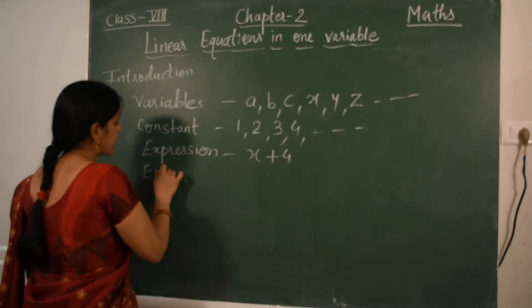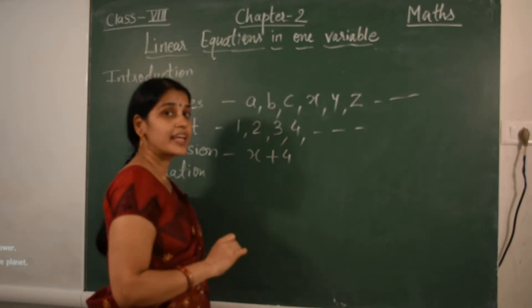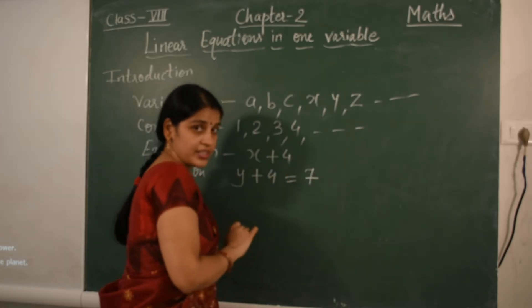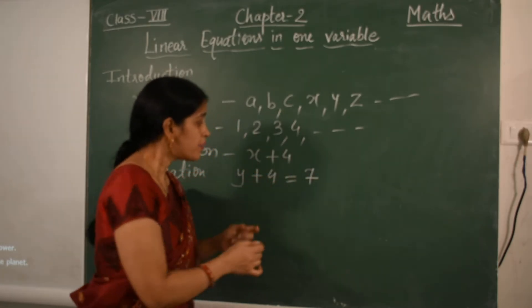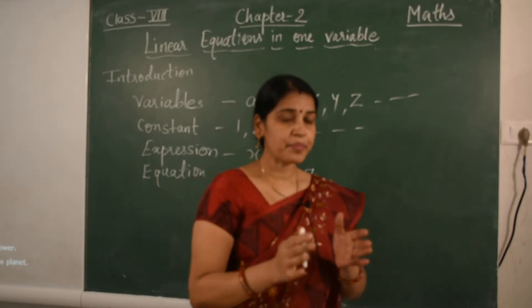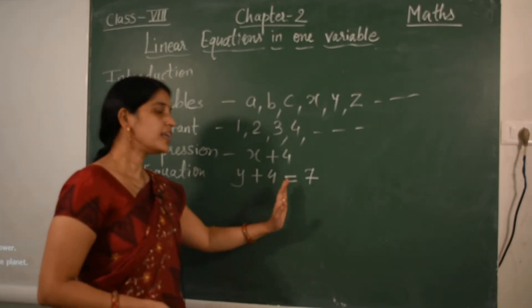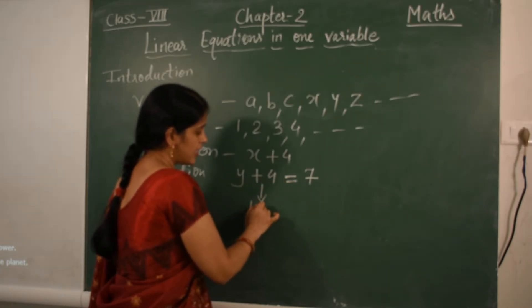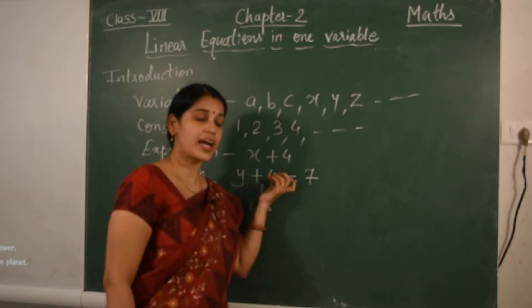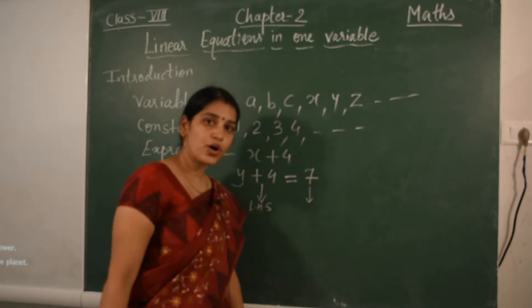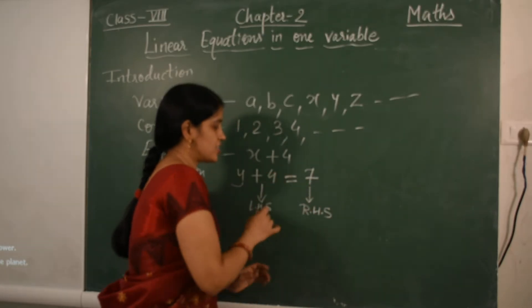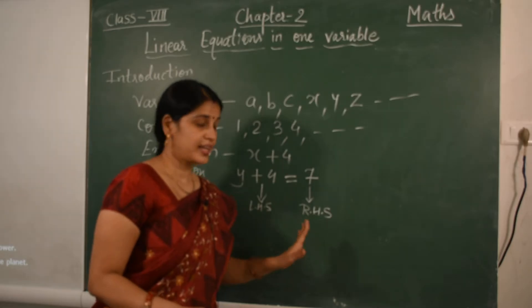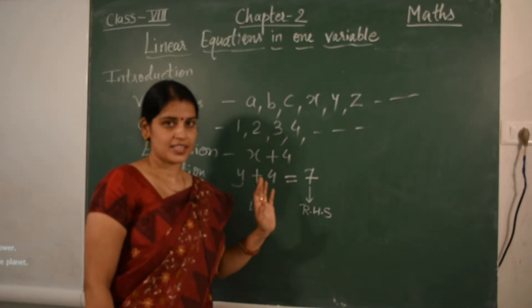Now next one is equations. What is an equation? An equation is like Y plus 4 equals 7. This is an equation because it has an equality sign. An equation contains an equal-to sign and has two parts: the left side of the equal sign is LHS, and the right side is RHS. The difference between an expression and an equation is that an expression has no equality sign, but an equation does.